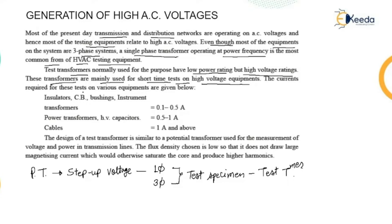The current required for these tests varies by equipment. For insulators, circuit breakers, bushings, instrument transformers, the required current is 0.1 to 0.5 ampere. For power transformers and high voltage capacitors, it is 0.5 to 1 ampere, and for cables it is 1 ampere and above.